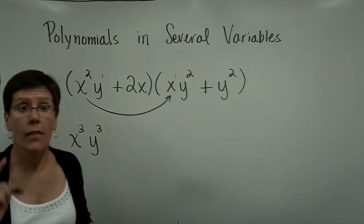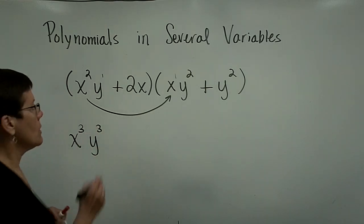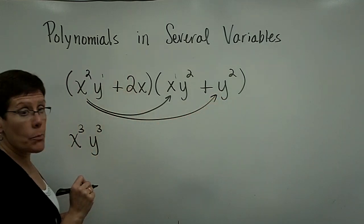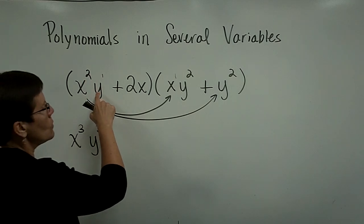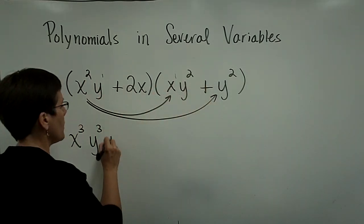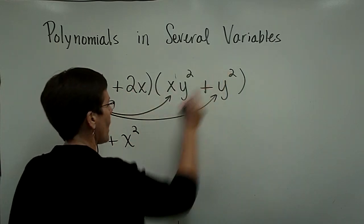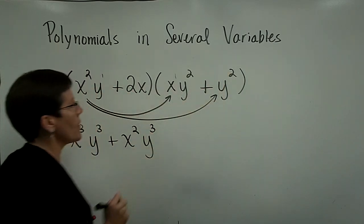The outside, in the FOILing process, I have x²y times y². x² stays as is. y¹ times y² is y³.